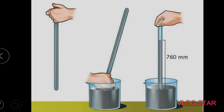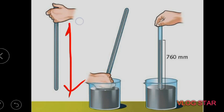He first discovered a measuring method. What he did was he took a glass tube, about 10 meters in length, and filled the entire glass tube with water. Then he inverted the glass tube into a jar, as you can see in this picture.